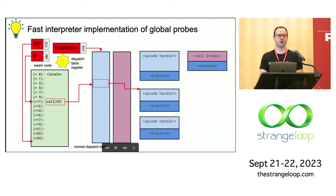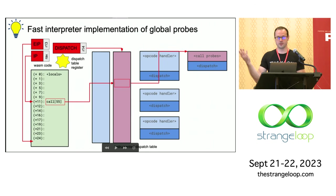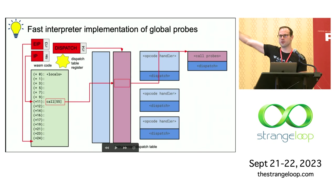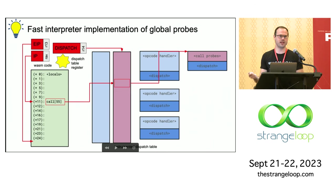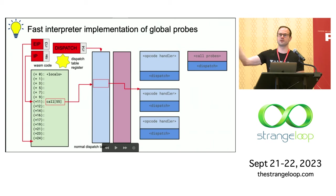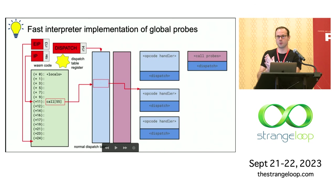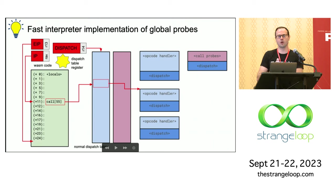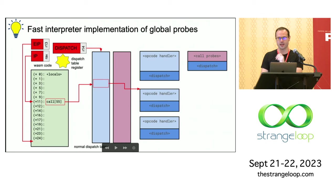The register now points to a different table where every entry actually goes to an instrumented version that calls the user callback. When you switch on this instrumentation, we only have to switch one register; if we want to switch it off, we can switch the register back. Because there's no overhead for the normal path — we're always just using the normal dispatch table if things aren't turned on — it means we don't need a special debugging mode for our VM. You don't need to build Wizard in a special way to get this. It's always there and imposes no overhead on production performance. That instrumentation capability is always there with no overhead.